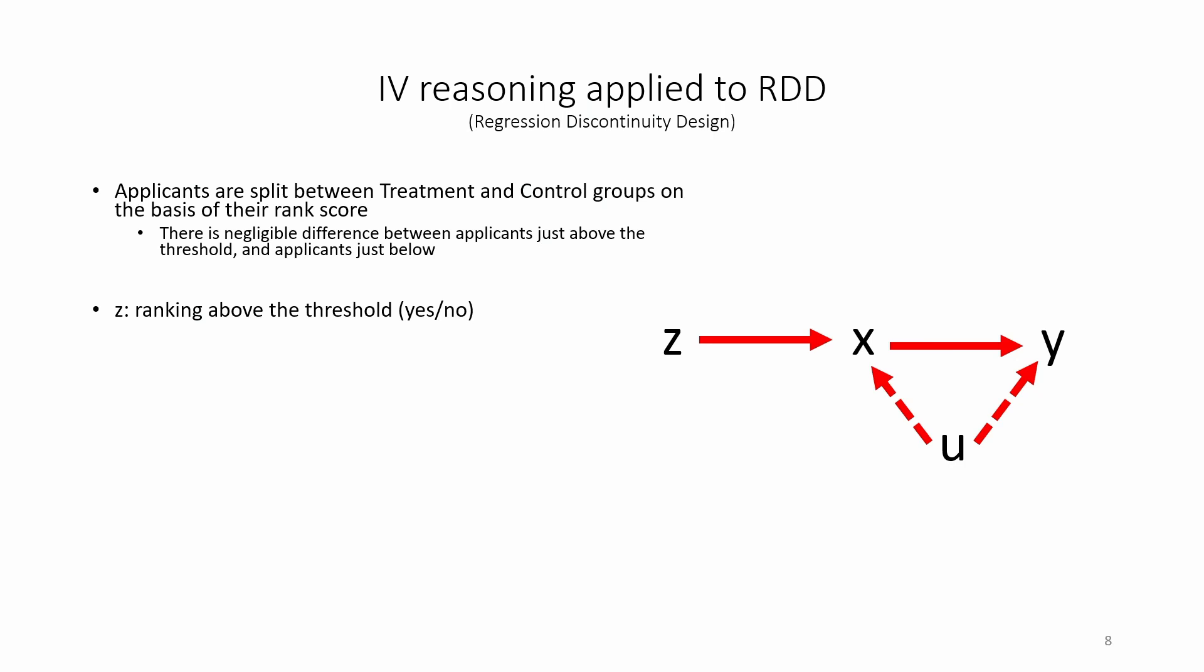Z corresponds to whether the applicant is in the group of grant recipients or in the control group of non-recipients. Y is the outcome variable, for example, performance. Here, Z satisfies the two requirements of an IV.